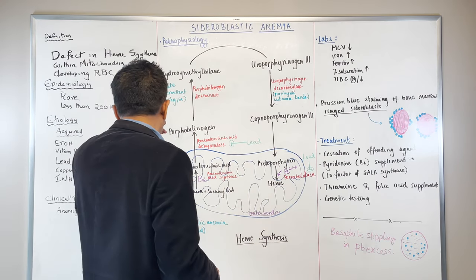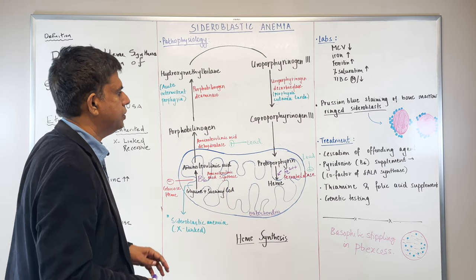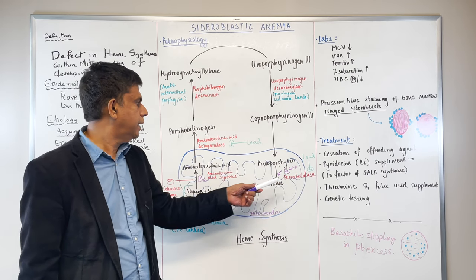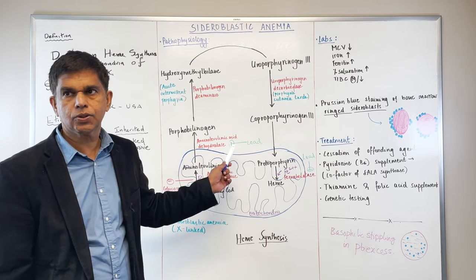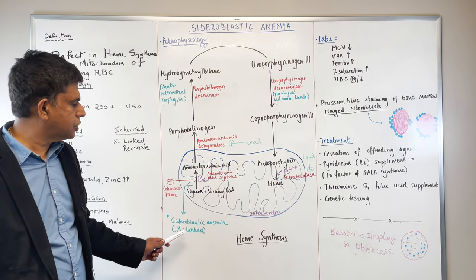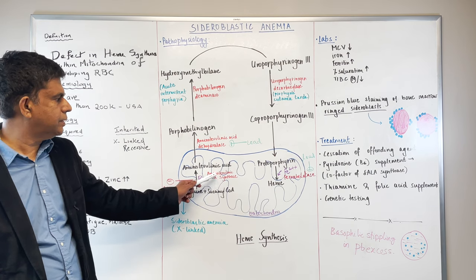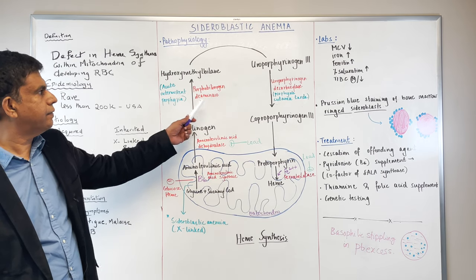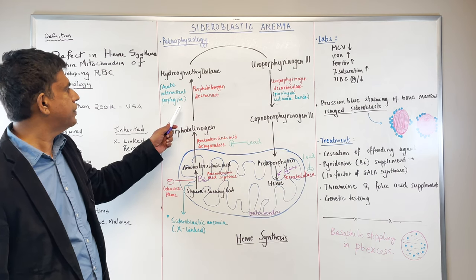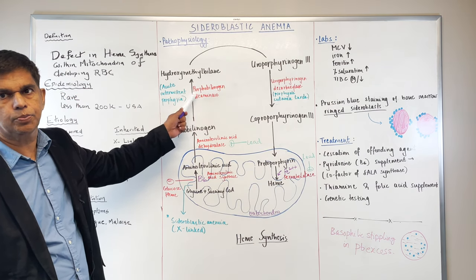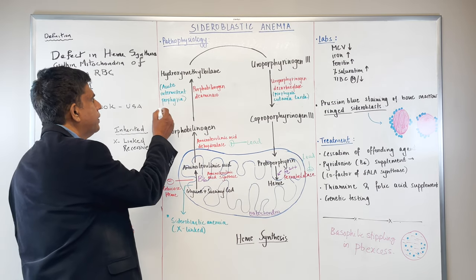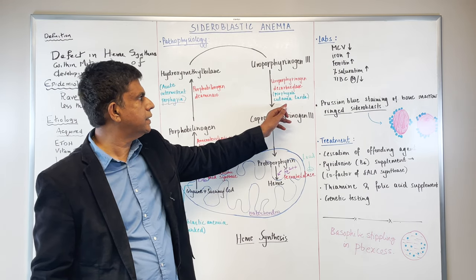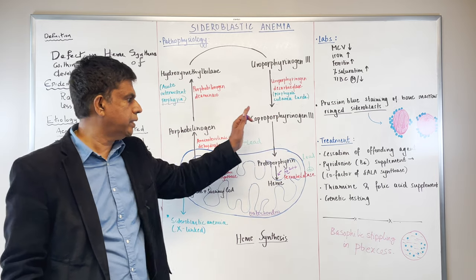Now let's look at pathophysiology. In lead poisoning, it affects ferrochelatase enzyme and also aminolevulinic acid dehydratase. In X-linked sideroblastic anemia, the problem is at aminolevulinic acid synthase. Porphyria affects the porphobilinogen deaminase step. Also, uroporphyrinogen decarboxylase is involved in porphyria cutanea tarda — all very important distinctions.